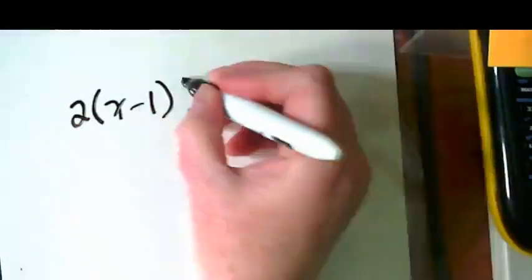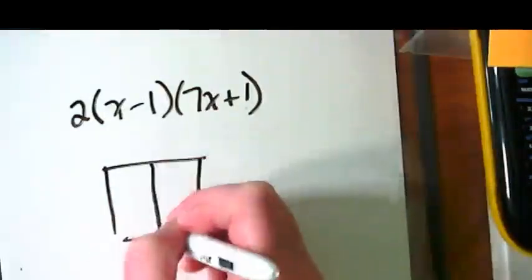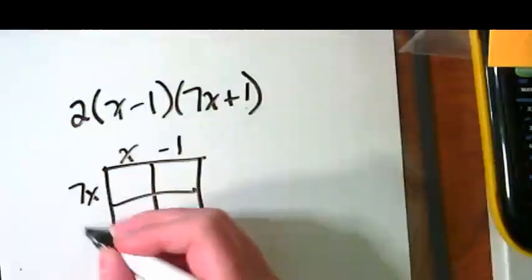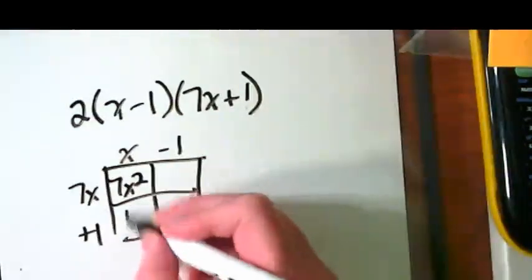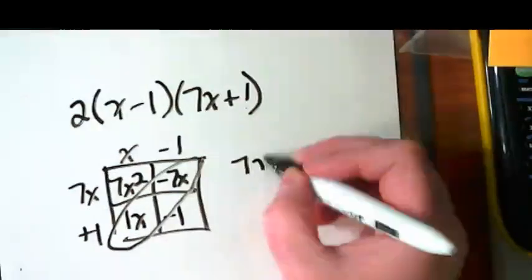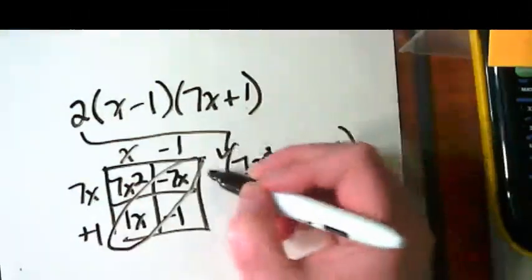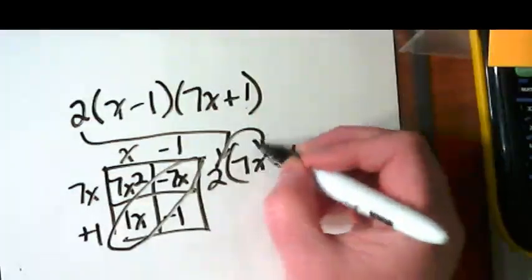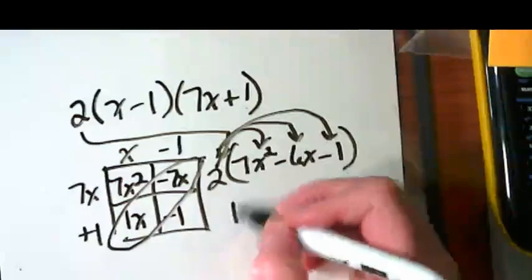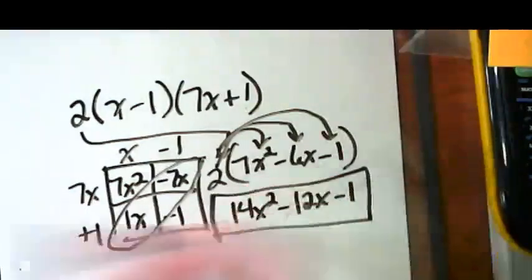How do I check my work? Well, I take that 2 times x minus 1 and 7x plus 1. And the first thing I want to do is use my box. And then I pull this 2 down and multiply it times everything.